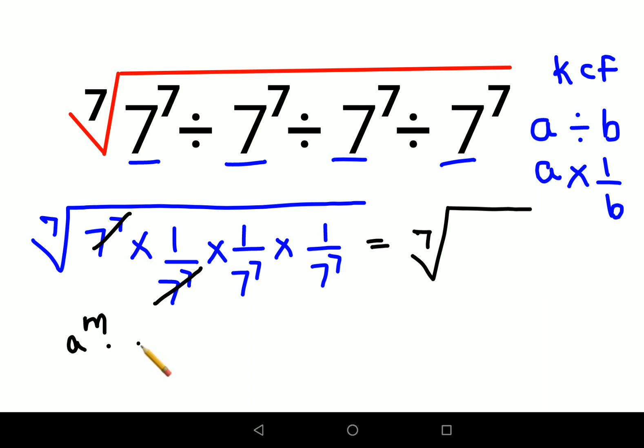and indices are different, then in this case the indices get added. So 1 times 1 gets you just 1, and 7 raised to 7 times 7 raised to 7 gets you 7 raised to 7 plus 7, which equals 7 raised to 14.